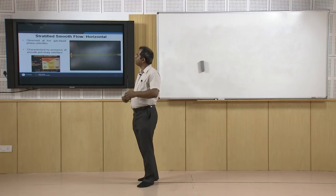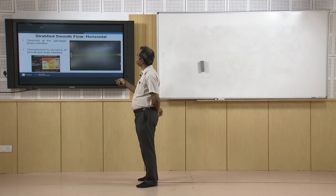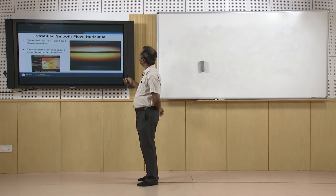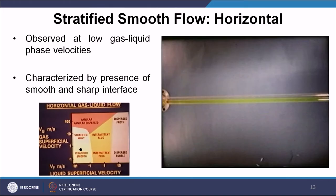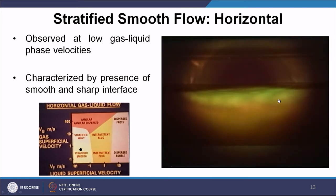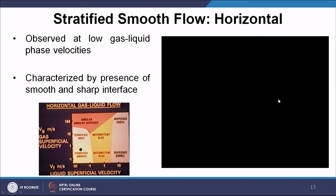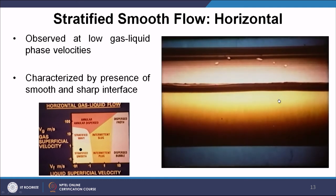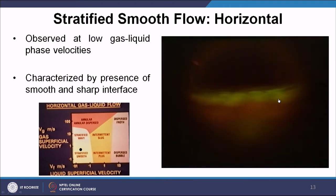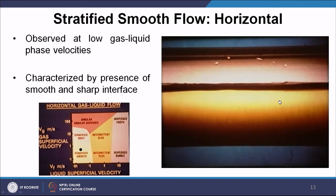In horizontal configuration, the first flow pattern is stratified smooth flow. Here, liquid flows at the bottom and gas flows at the top with a very smooth, sharp interface — the interface is sharp, not diffused. This is observed at very low gas and liquid phase velocities, in the corresponding low-velocity domain of the flow regime map.